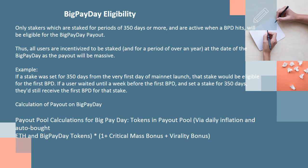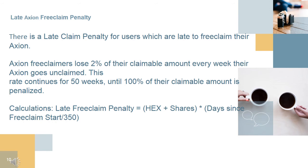Calculation of payout on Big Pay Day: the payout pool is calculated via daily inflation and auto-bought ETH and Big Pay Day tokens, multiplied by (1 + critical mass bonus + virality bonus). Late Axion Free Claim Penalty: there is a late claim penalty for users who are late to free claim their Axion — claimers lose 2% of their claimable amount every week their Axion goes unclaimed. This rate continues for 50 weeks until 100% of their claimable amount is penalized. The formula is: Late Free Claim Penalty = HEX shares × (days since Free Claim start / 350).